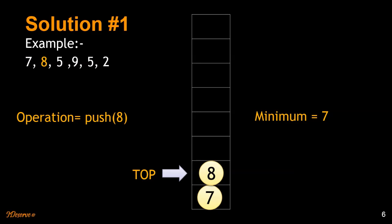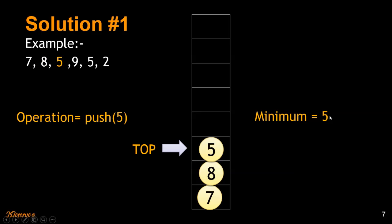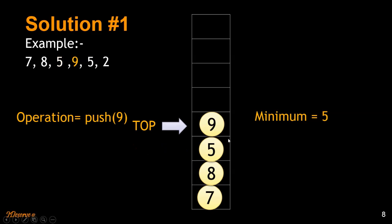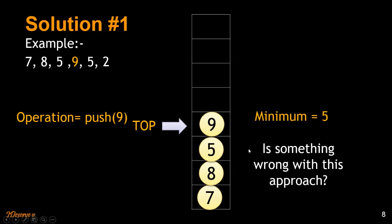Let's push 8. Since 8 is greater than 7, the minimum isn't updated. Let's push 5 — since 5 is less than 7, the minimum gets updated to 5. Then let's push 9. Since 9 is greater than 5, we don't update the minimum. The minimum is still 5.